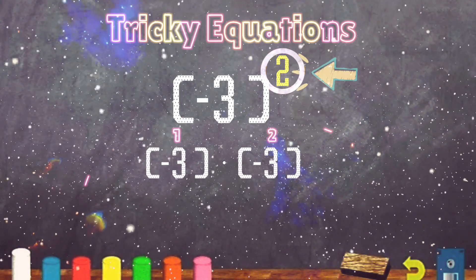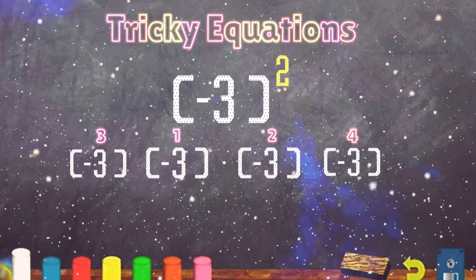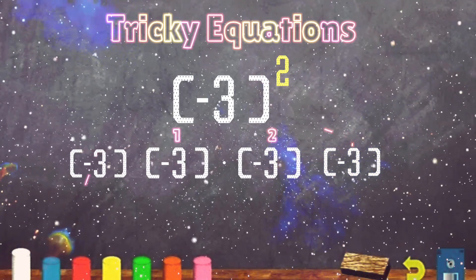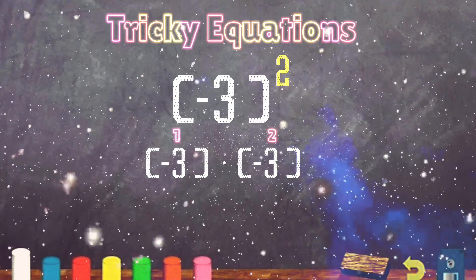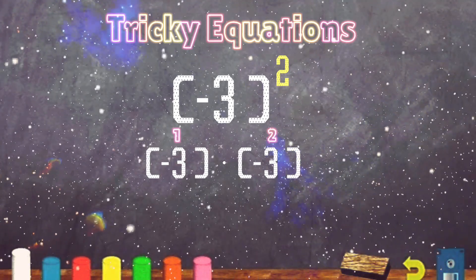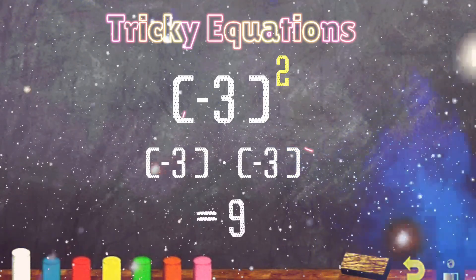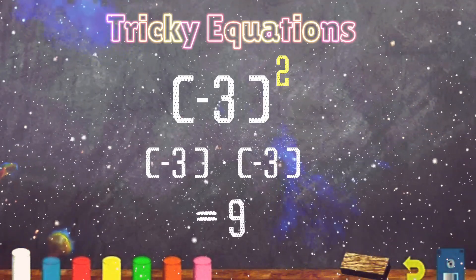If the exponent was 3 or 4, then we would have multiplied this 3 or 4 times by itself. So let's solve. Negative 3 times negative 3 equals positive 9. Negative times a negative equals a positive.